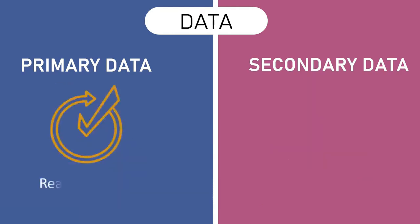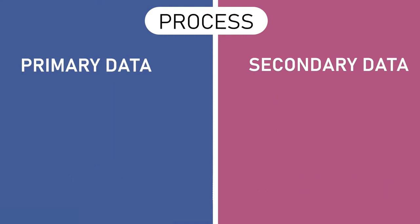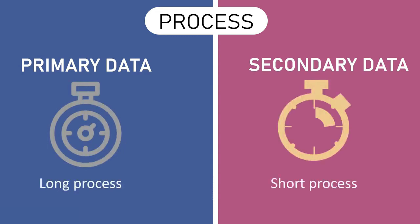Primary data includes real-time data, on the other hand secondary data is related to past data. Accessing primary data includes a relatively long process, whereas secondary data includes a short process as it is quick and easy to collect.